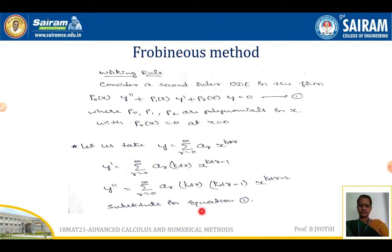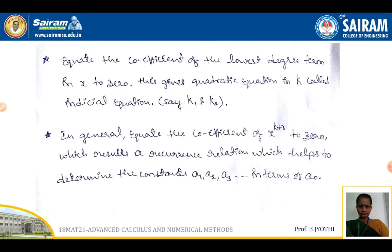Substituting all these into equation 1 and equating the coefficients of the lowest degree term in x to 0, this gives a quadratic equation in k called the indicial equation, with roots k1 and k2.